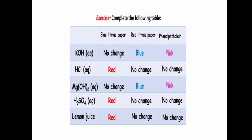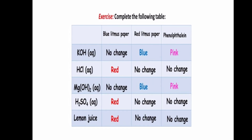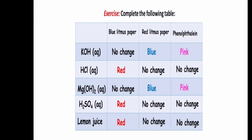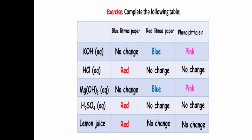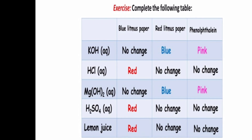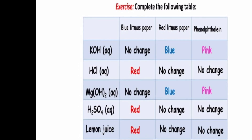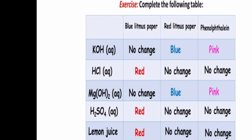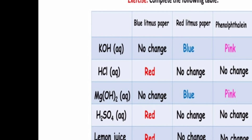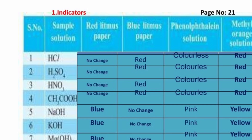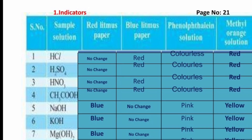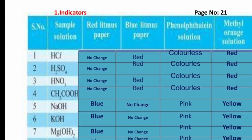I will make a practice table for you. Substances include KOH, HCl, Mg(OH)2, H2SO4, and lemon juice. KOH is a base, HCl is an acid, Mg(OH)2 is magnesium hydroxide, H2SO4 is sulfuric acid, and lemon juice is an acid. We compare their effects on blue litmus paper, red litmus paper, phenolphthalein, and methyl orange.